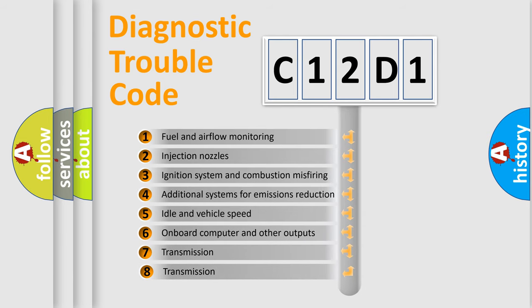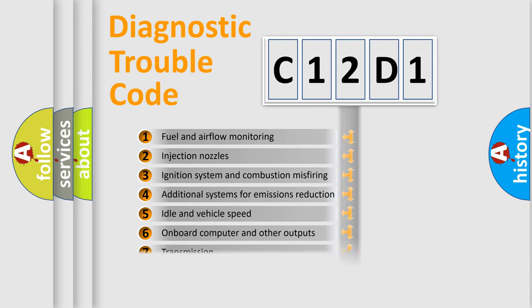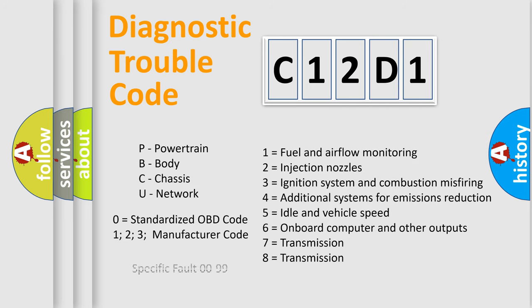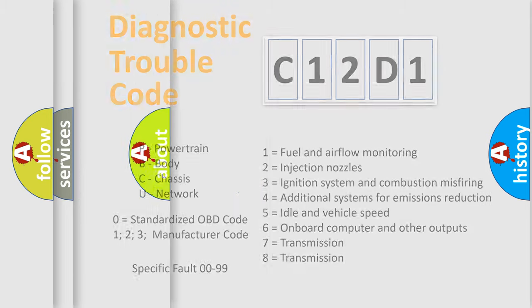The third character specifies a subset of errors. The distribution shown is valid only for the standardized DTC code. Only the last two characters define the specific fault of the group. Let's not forget that such a division is valid only if the second character code is expressed by the number zero.